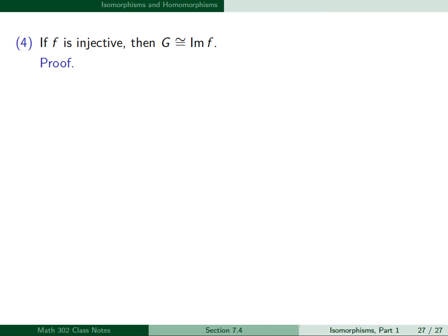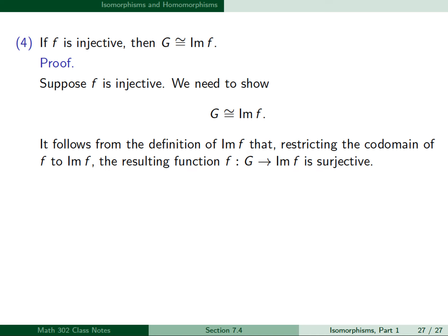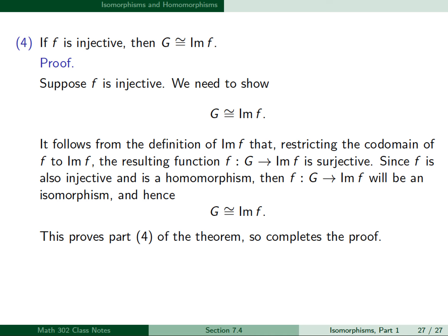For part 4, suppose f is injective. We need to show G is isomorphic to the image of f. By definition of the image of f, restricting the codomain of f to the image of f gives a surjective function from G to the image of f. Since f is also injective by hypothesis and is a homomorphism, f from G to the image of f is an isomorphism, and hence G is isomorphic to the image of f. This completes the proof of the theorem and finishes Part 1 of Section 7.4.